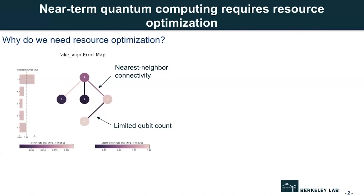For example, we cannot connect Q1 with Q4 directly since there is no link. And these error bars show the different errors of quantum operations like readout error, quantum gate error, etc. Due to these physical constraints, we need to optimize the resource to better utilize the quantum computer.